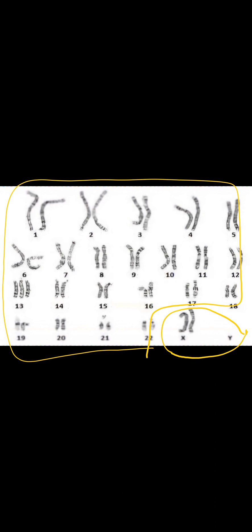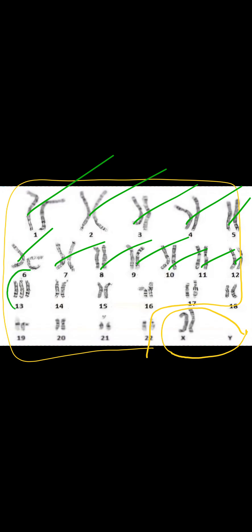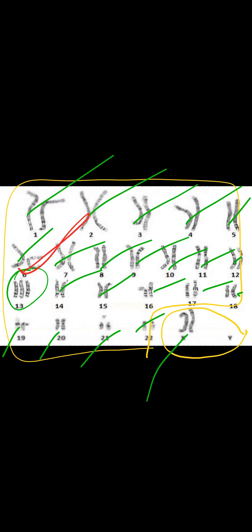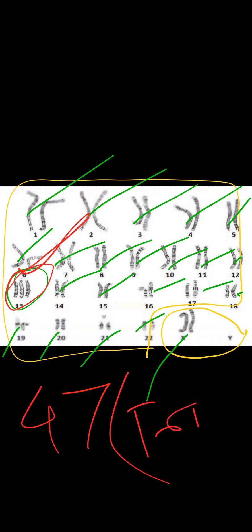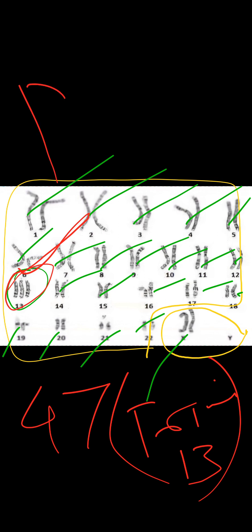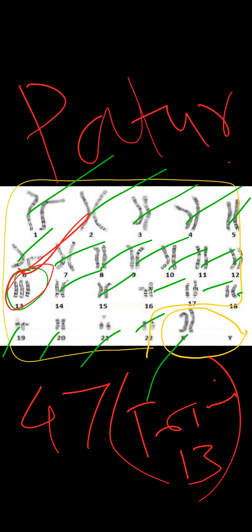In the next report, these are the sex chromosomes and these are the autosomes. Analyzing the autosomes, most chromosomes are normal, but there are three chromosomes at chromosome number 13. The patient has two X chromosomes, so gender is female. The karyotype is 47 with trisomy at chromosome 13 — this is basically Patau syndrome.